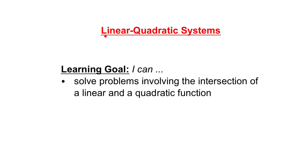We're going to talk about linear quadratic systems. In the warm-up, we were looking at a linear system — finding the point of intersection of two lines. A linear quadratic system is when we're finding the point of intersection between a line and a parabola — linear and quadratic functions.